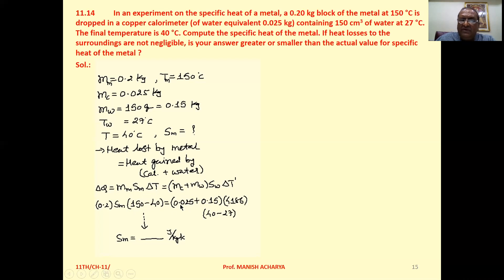Mass of calorimeter 0.025, then mass of water 0.15, specific heat of water 4186, delta T dash. Initially calorimeter plus water was at 40 degrees Celsius. Finally it is at 27 degrees Celsius.